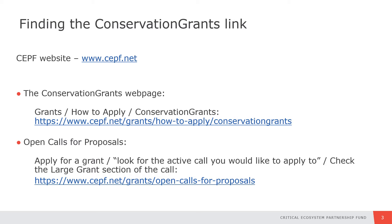Finding the Conservation Grants link is easy and you have two ways to do so. You will have to go to the CEPF website. Your first option is to go to the Conservation Grants webpage, located under Grants – How to apply – Conservation Grants. Your second option is to check the open calls for proposals. Click on Apply for a Grant located in the top right corner of the CEPF website. Look for the active call you would like to apply to and then check the large grant section of the call where you will find the Conservation Grants link.